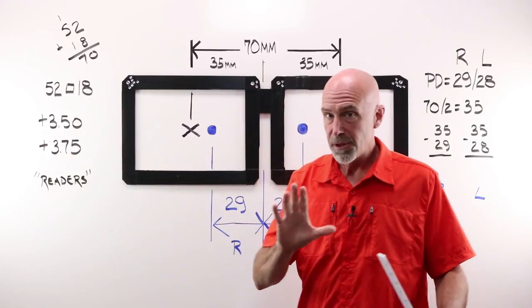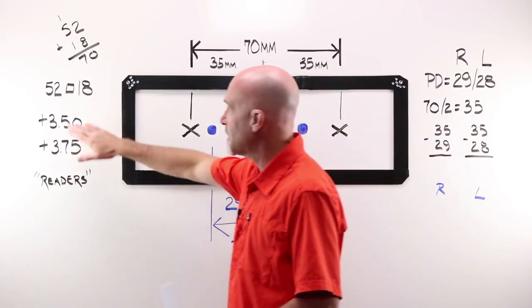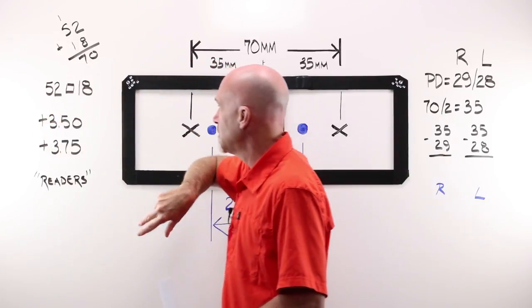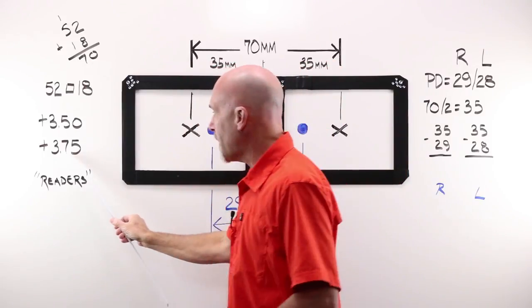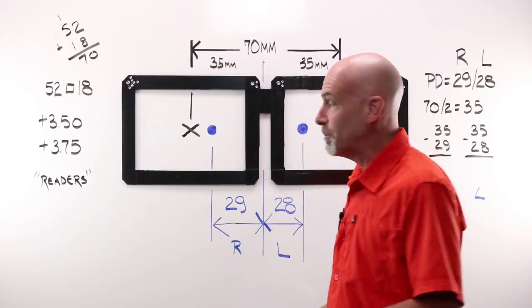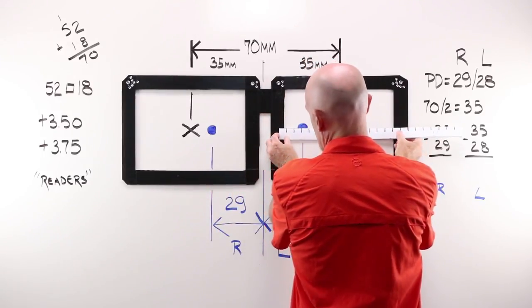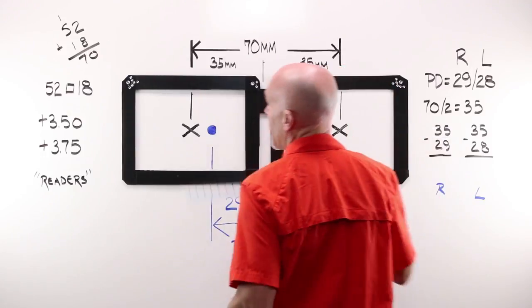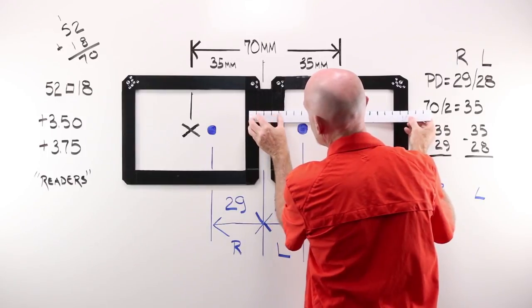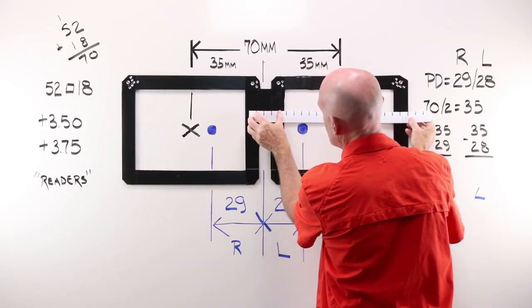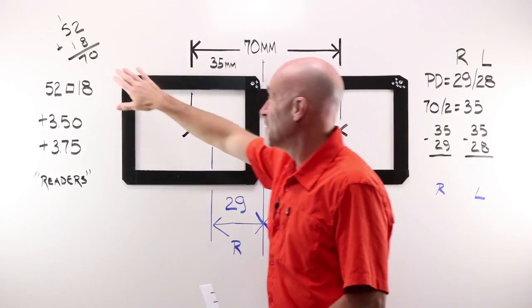Now, a couple of things are going to be different than the last two videos. One, our power is starting to creep up. So instead of just taking my numbers of 52-18 at face value, adding them together and getting 70 millimeters, because the power is creeping up, I'm actually going to double check that. I would actually measure my A exactly where I'm supposed to according to the boxing system, double check that I have 52, and then I would check my frame DBL distance between my lenses, and make sure that I had 18. That checks out, so we're good to go. We can use our 70.